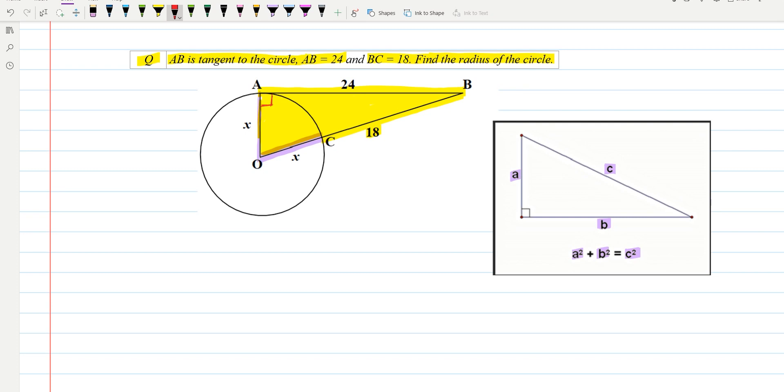Now if we see, the base is provided which is 24. So if I write the base square, 24², plus perpendicular square, which is AO or x (we have taken radius as x), so x² will equal hypotenuse square. Hypotenuse is OB, so OB² will be x plus 18, so (x + 18)² by applying this.